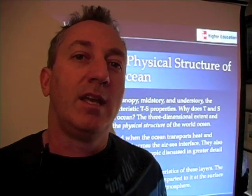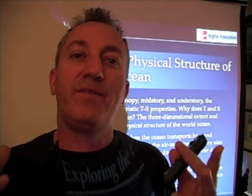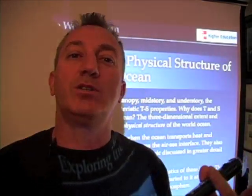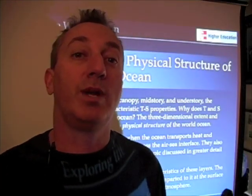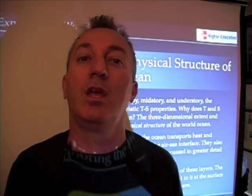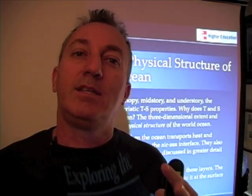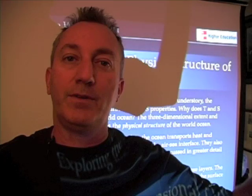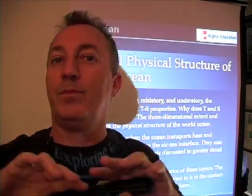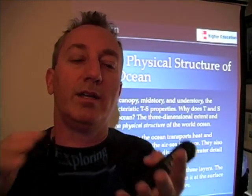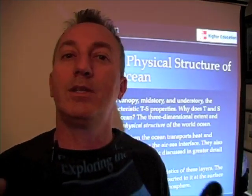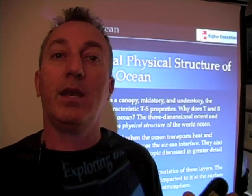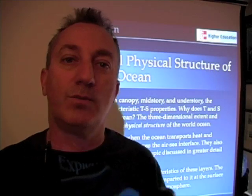I want to talk about how the physics of the ocean creates a three-dimensional structure, much in the same way that the geology of land or even a tropical rainforest creates a three-dimensional structure that organisms can exploit. Differences in temperature and salinity at the surface and across from lower to higher latitudes, as well as from the surface to the depths, create different water masses with different properties conducive to habitats for different organisms.